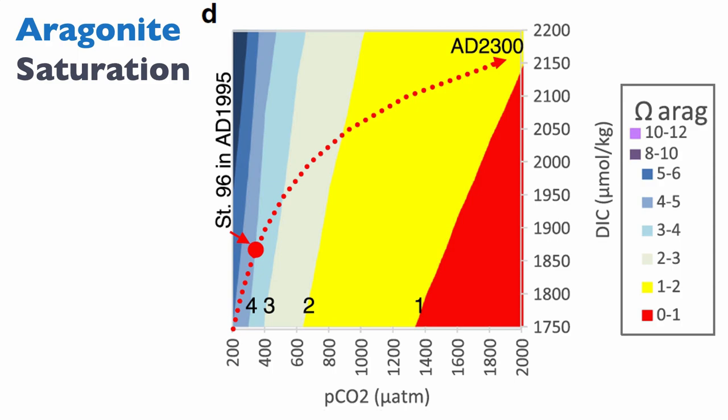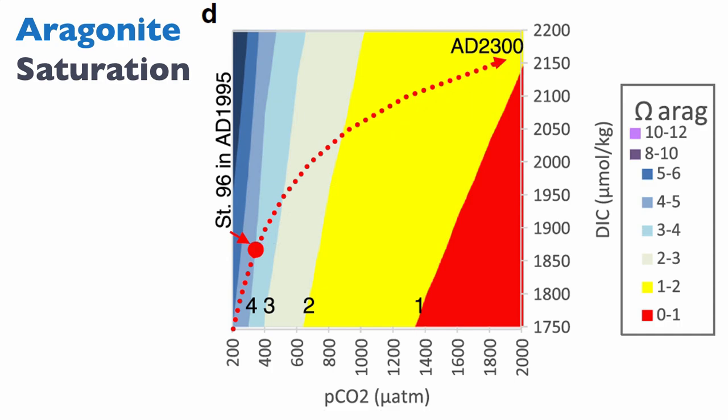Looking at the saturation state of aragonite with respect to the same two parameters — pCO2 versus DIC — the red line again represents a projection. It's really frightening because we are actually much closer to undersaturation with respect to aragonite, since it is not as supersaturated as calcite in the ocean. We are already in a zone between two and three in terms of supersaturation. Going below a supersaturation of three for aragonite makes it very difficult for aragonitic skeletons to be precipitated.